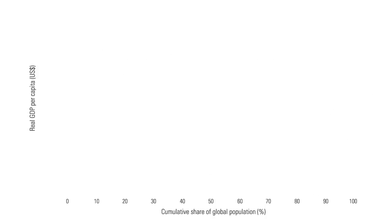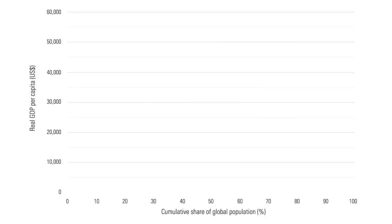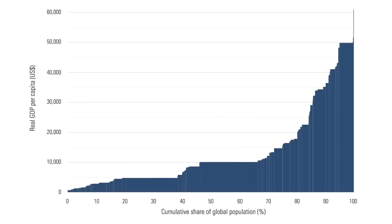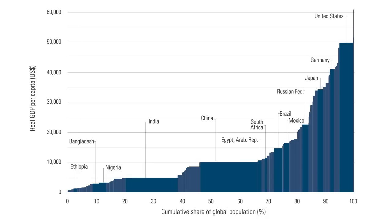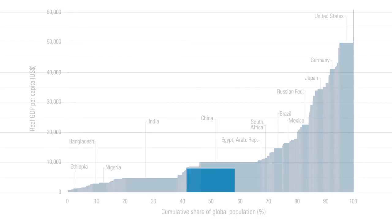This chart summarizes the structure of the world economy and the distribution of its population based on International Comparison Program, ICP 2011 results. Let's break the chart down to understand exactly how.